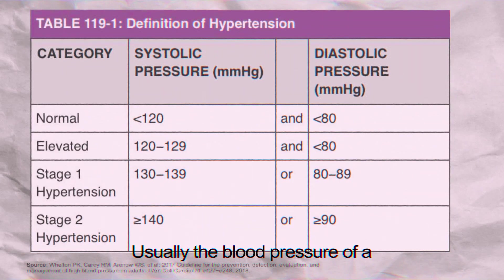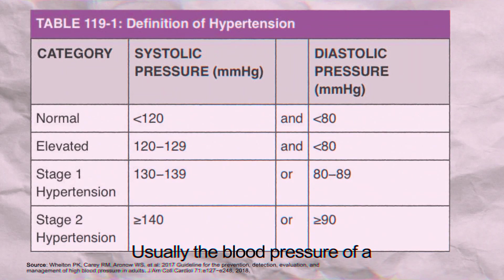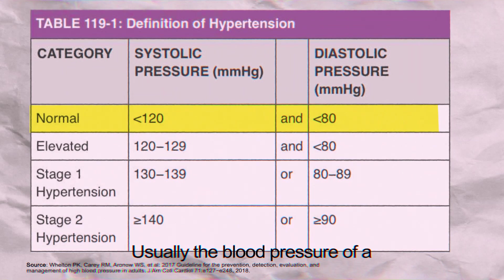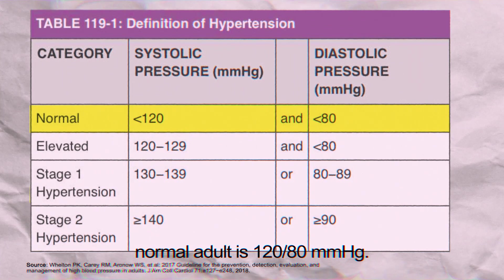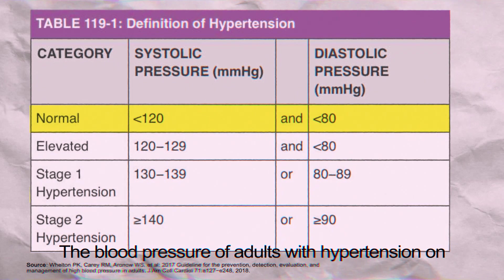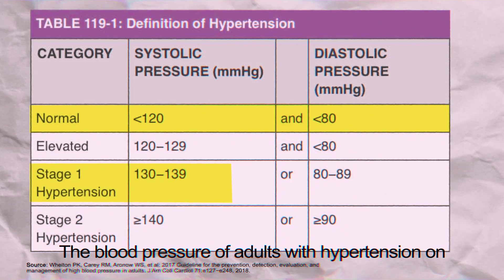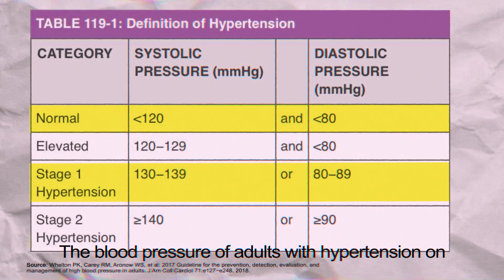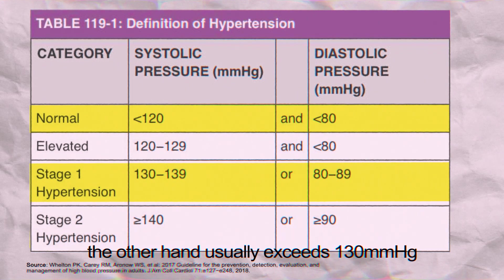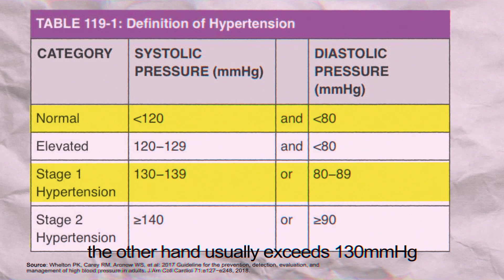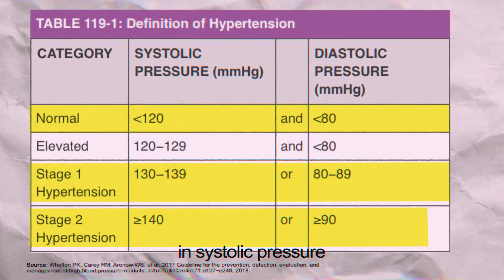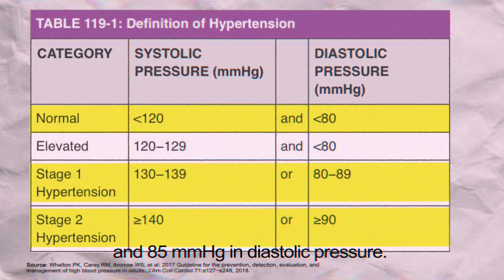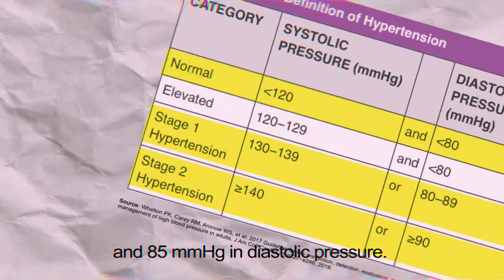Usually, the blood pressure of a normal adult is 120 over 80 mmHg. And the blood pressure of adults with hypertension, on the other hand, usually exceeds 130 mmHg in systolic pressure and 85 mmHg in diastolic pressure.